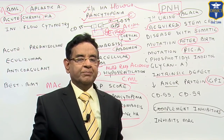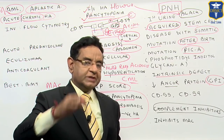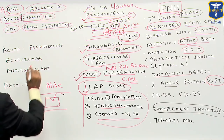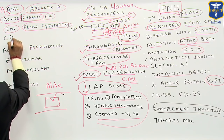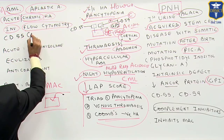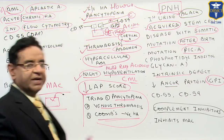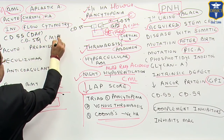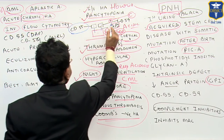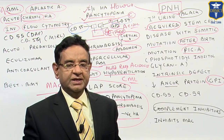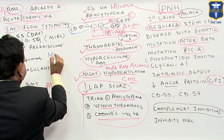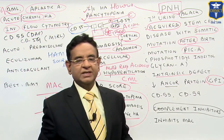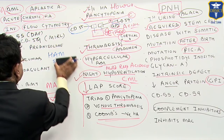Whenever you are thinking about PNH, the best initial test as well as the most accurate test is flow cytometry. Flow cytometry detects deficiency of CD55 — also known as DAF, decay accelerating factor — and also detects deficiency of CD59, also known as MIRL. Previously, Ham's test or sucrose lysis test were done, but these are obsolete tests and are no longer performed. We talk only about flow cytometry.